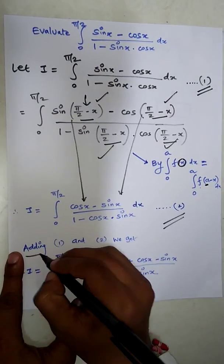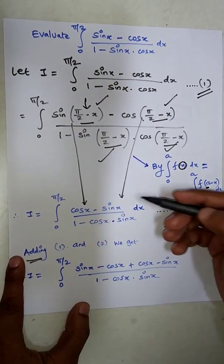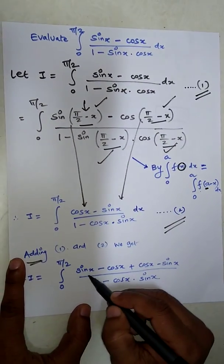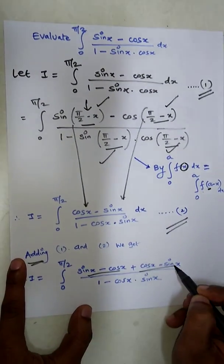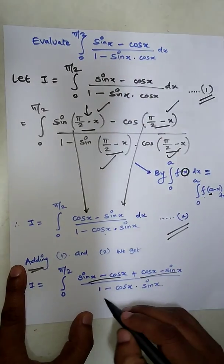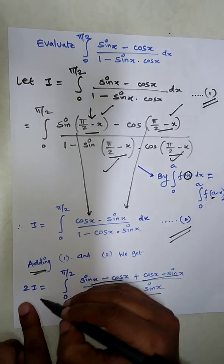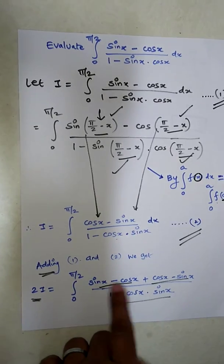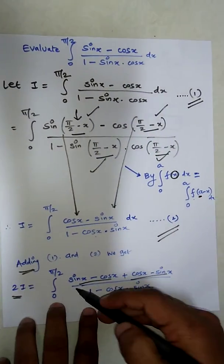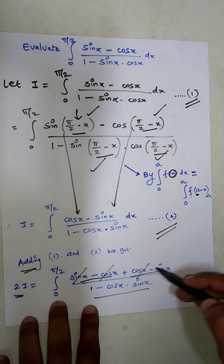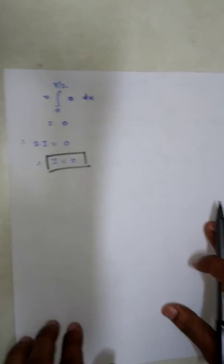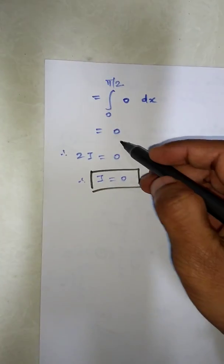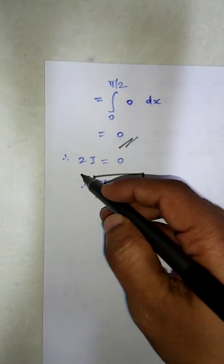Now we add equation 1 and equation 2. The denominator is the same in both, so it remains as is. On the left-hand side we get 2I. In the numerator, (sin x − cos x) + (cos x − sin x) = 0, so everything cancels. The integral of 0 is 0, giving 2I = 0.